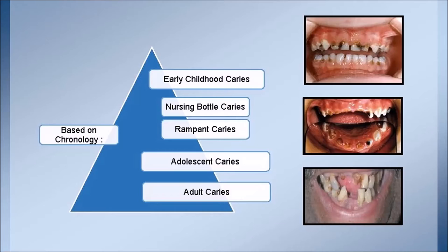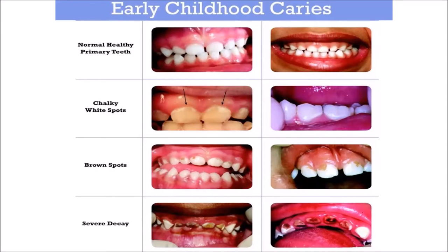Based on chronology, early childhood caries means very early when children start getting caries. Nursing bottle caries is between one to three years when children are still having bottle drinks — the lower teeth get protected by saliva while the upper teeth get affected. Rampant caries is when the spread is very high. Adolescent caries occurs due to improper maintenance and food changes, especially aerated drinks and high-calorie zero-nutrient food. Adult caries occurs on the neck of the tooth.